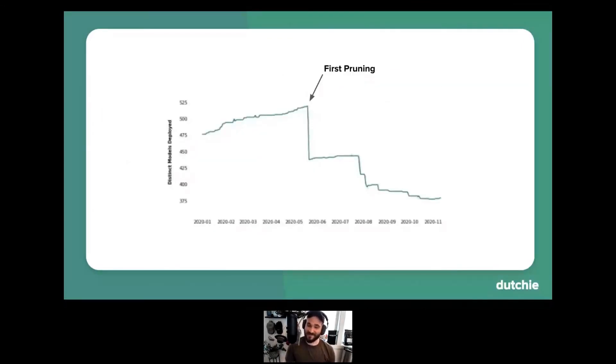So the good news is that this process seems to work quite well. The chart here shows the number of DBT models that we're deploying in our main DBT job on the Y-axis. And you can see that this automated pruning process helped us get down from somewhere about 520 models at our peak to about 375 models today. So ultimately, much more manageable for our data team and our stakeholders as well.